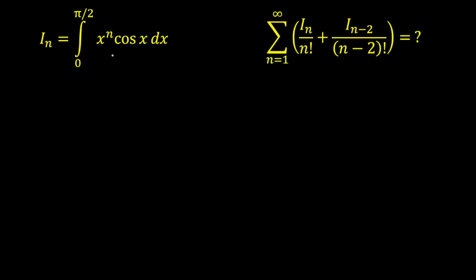The first question you might be thinking is: how to start this problem? You need to observe the question carefully — the hint is given in the question itself. With power n the index is I(n); if the power becomes n-1 the index will be I(n-1); similarly for power n-2 it becomes I(n-2). They are asking for I(n) and I(n-2), so using this integral you have to find a reduction formula relating I(n) and I(n-2).